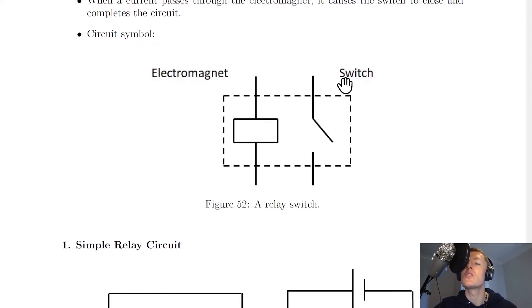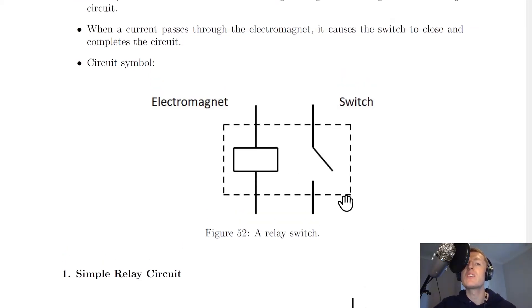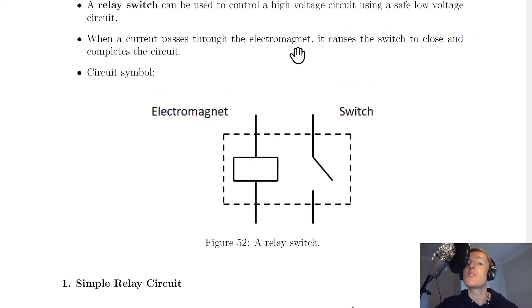So how does it work? Well, it says here that when a current passes through the electromagnet, it causes the switch to close and completes the circuit.